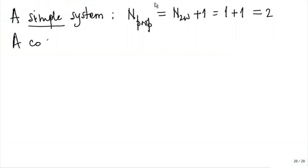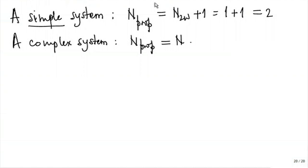For a simple compressible system like a fluid, the two properties could be pressure and specific volume for a closed system. For a complex system, the number of properties needed will be greater than two — it could be three, four, and so on. Most systems we work with will be simple compressible systems. For a rudimentary system, the number of two-way work modes is zero, so only one property is needed to define its state.